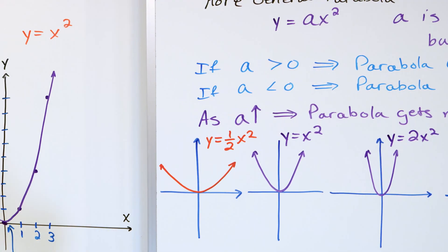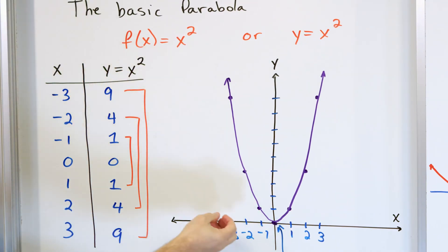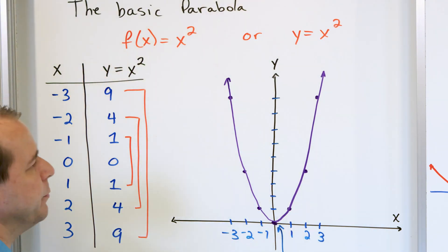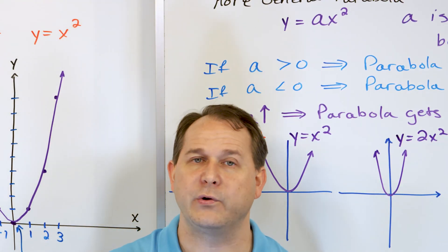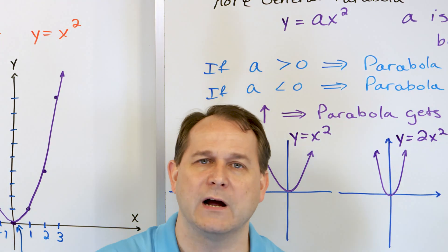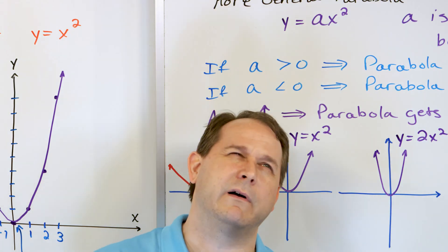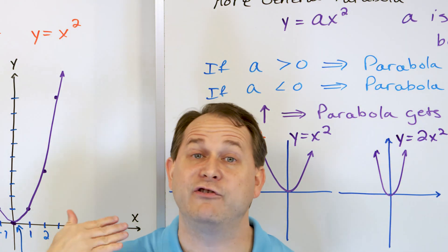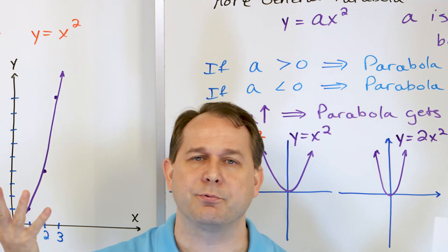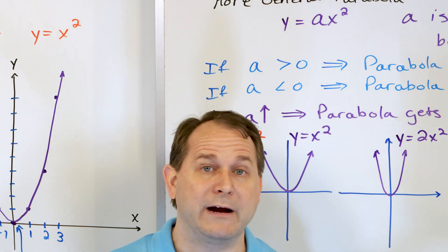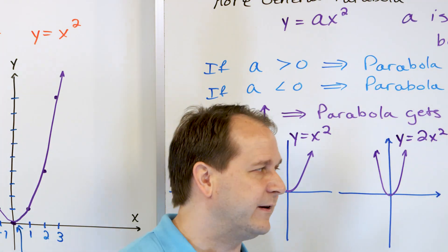I want you to have an intuitive understanding. When a is positive, it's a standard parabola that opens up, but as it gets bigger and bigger, it closes up because it's getting steeper. Now let's take a look at the other case: what happens if a is less than zero? We say that the parabola opens down.